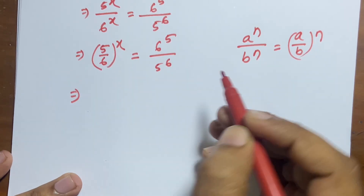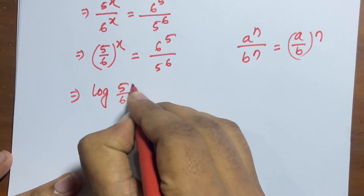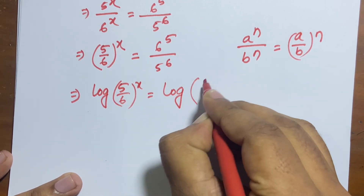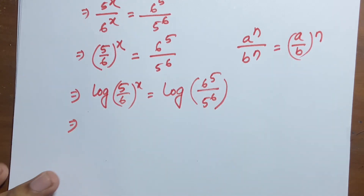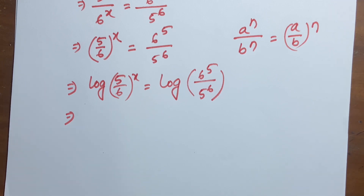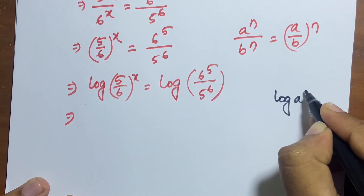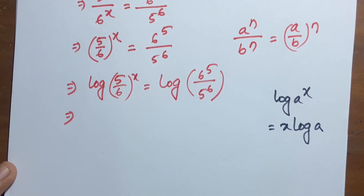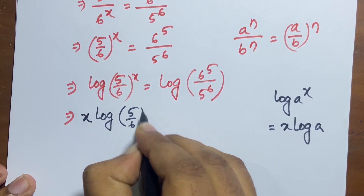I multiply both sides by log. Now: log(5/6)^x = log(6^5 / 5^6). We know that log(a^x) = x·log(a). I follow this formula, so x·log(5/6) = log(6^5 / 5^6).